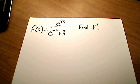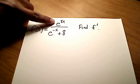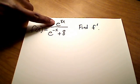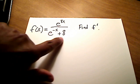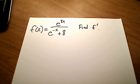If you are not sure about the quotient rule for finding a derivative, look that up somewhere. I'm going to consider my entire numerator, e to the 8x, as f, and my entire denominator, e to the negative x plus 8, as my g.